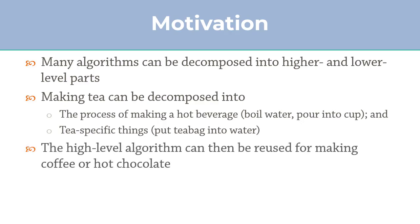After you have done the high level stuff, you can take a tea bag, put it into the water, add milk if you're British, or add lemon. So the high level algorithm — boiling water and pouring it into a cup — can then be reused. The tea-specific things are tea-specific, but everything else can be reused for making coffee or hot chocolate, and this is supported by the beverage-specific strategies. That is where the strategy pattern actually comes in.